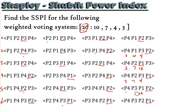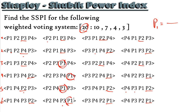Now that we've found all the pivotal players in each sequential coalition, the rest is similar to the Banzaf Power Index. We count how many times each player was underlined. Going through, player 1 was underlined 10 times. Because there are 24 sequential coalitions, there are exactly 24 total underlines, so player 1's power index is 10/24.